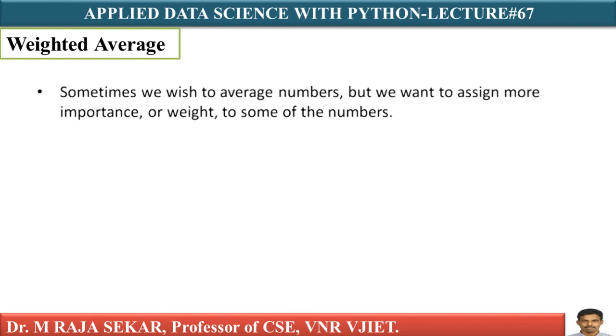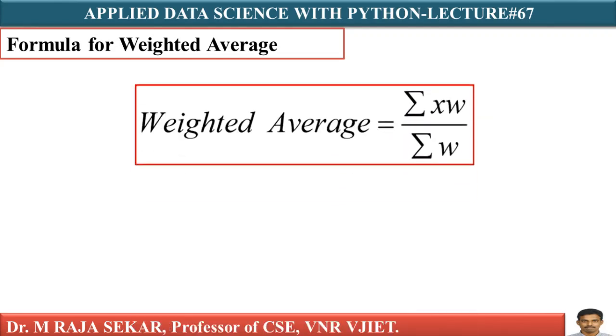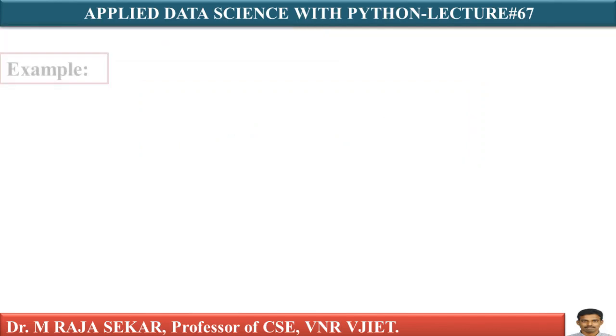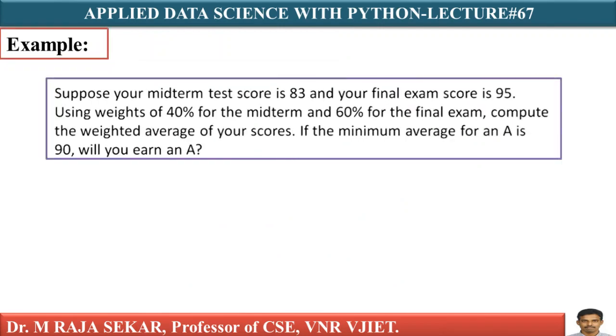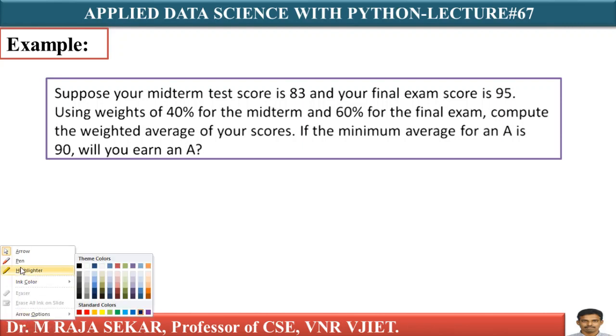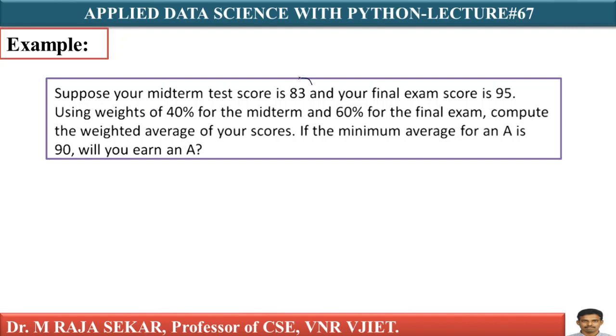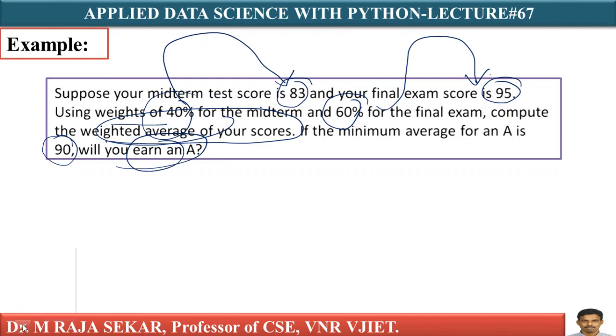What about weighted average? Where can one find applications of weighted average? The formula is sigma x into w by sigma w. This is one real time application. Your midterm marks has got some weightage and your final exam may have some weightage. Suppose your midterm test score is 83 and your final exam score is 95, using weightage of 40% for midterm and 60% for final exam. If the minimum average for an A is 90, will you earn an A? It is simple and straightforward.